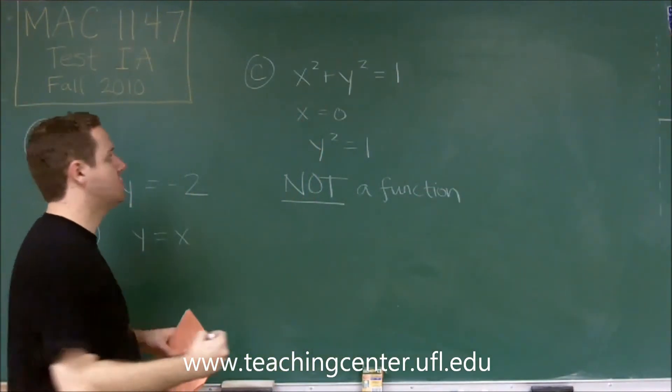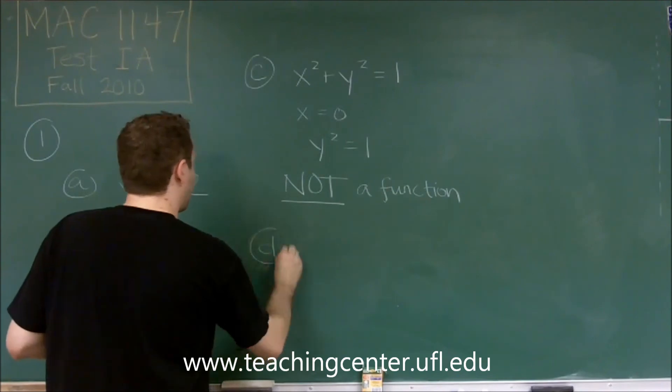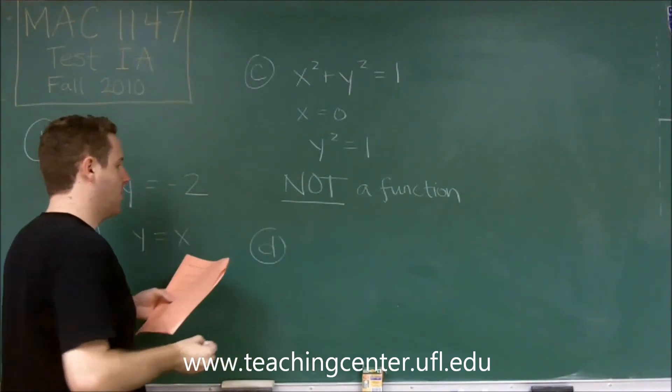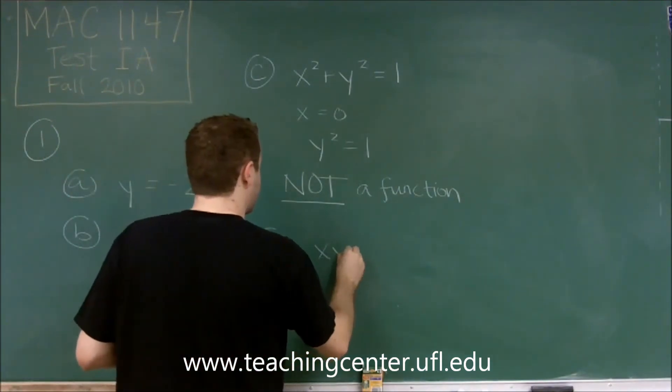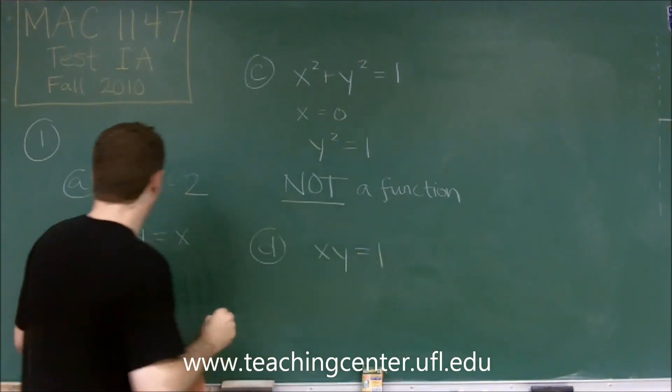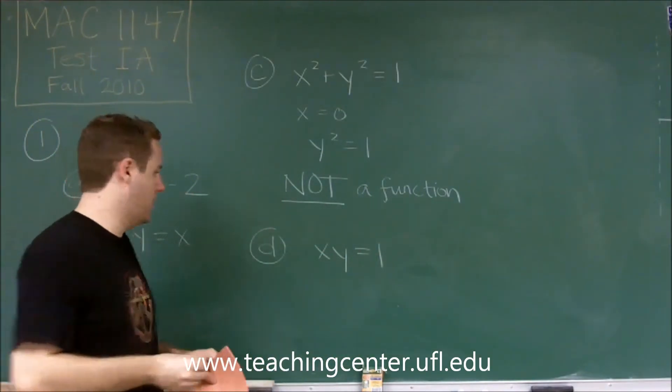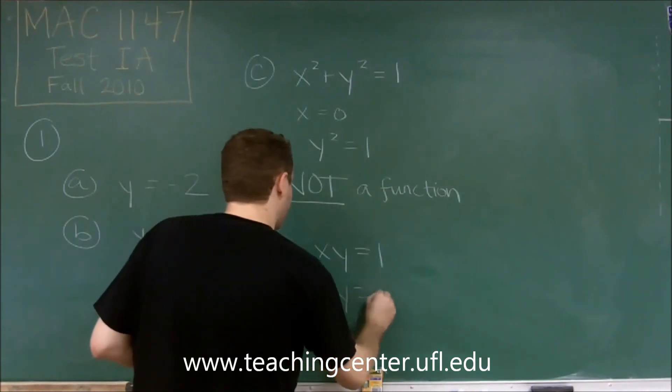We know that's the answer, but let's just check D also. We have xy equals 1. A good way to write that, just so it's easier to see, is solve it for y. So we have y equals 1 over x.